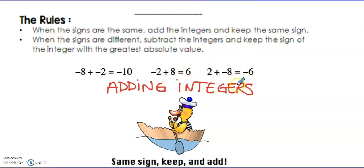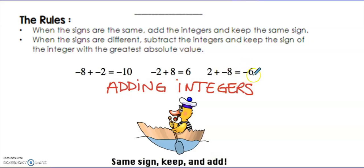For this one, we have different signs again, so 8 minus 2 is 6. The number with the largest absolute value here is negative, so it's going to be negative 6.